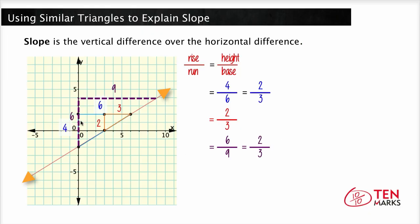So all right triangles drawn so that their longest side, the hypotenuse, rests on the line are therefore similar triangles. And because they're similar triangles, they have the same proportions. Now we're going to use this knowledge to answer this next question.